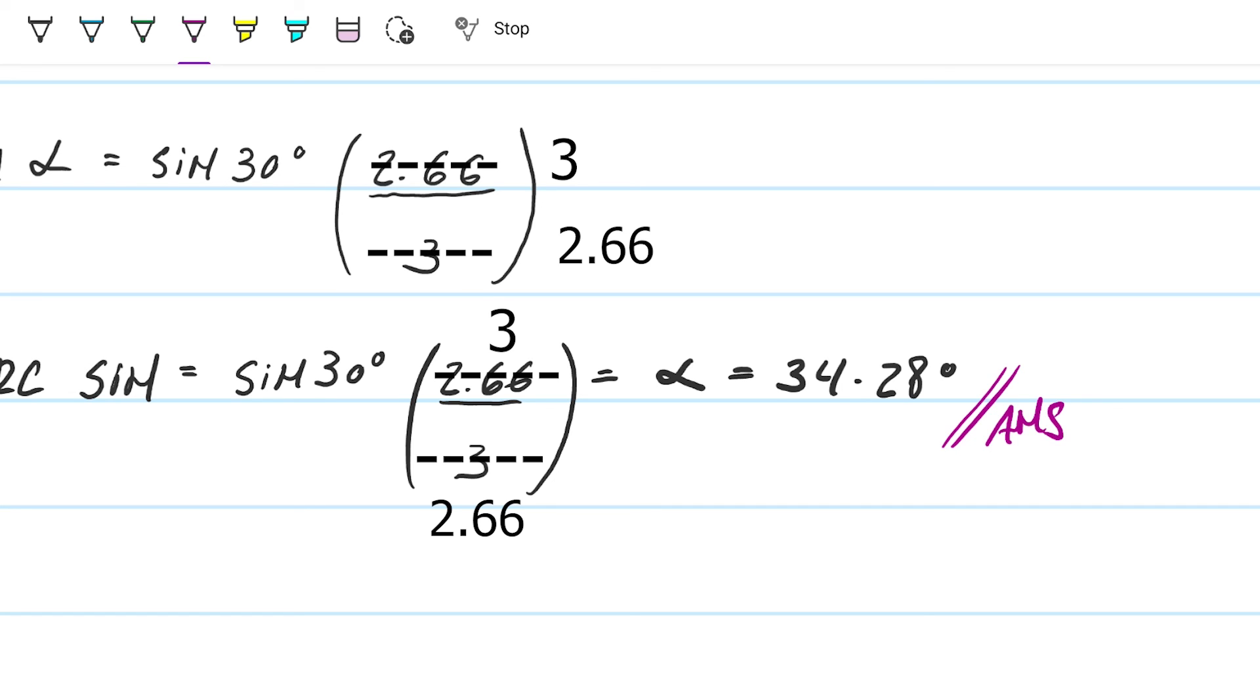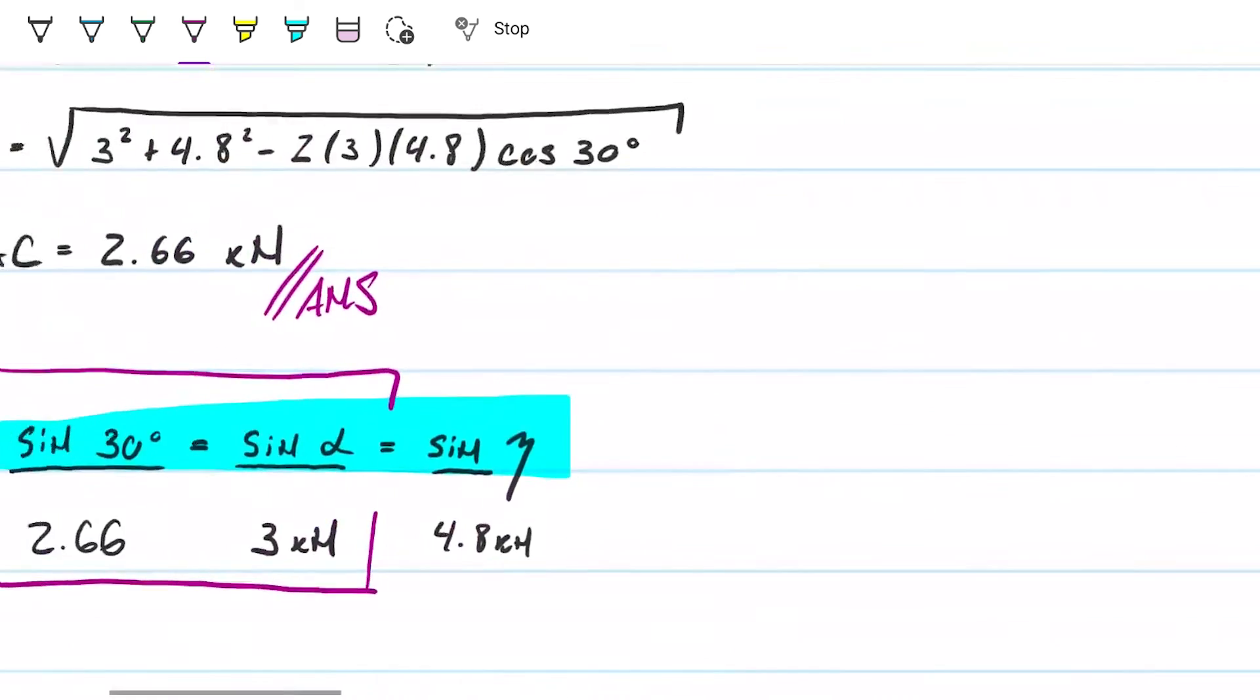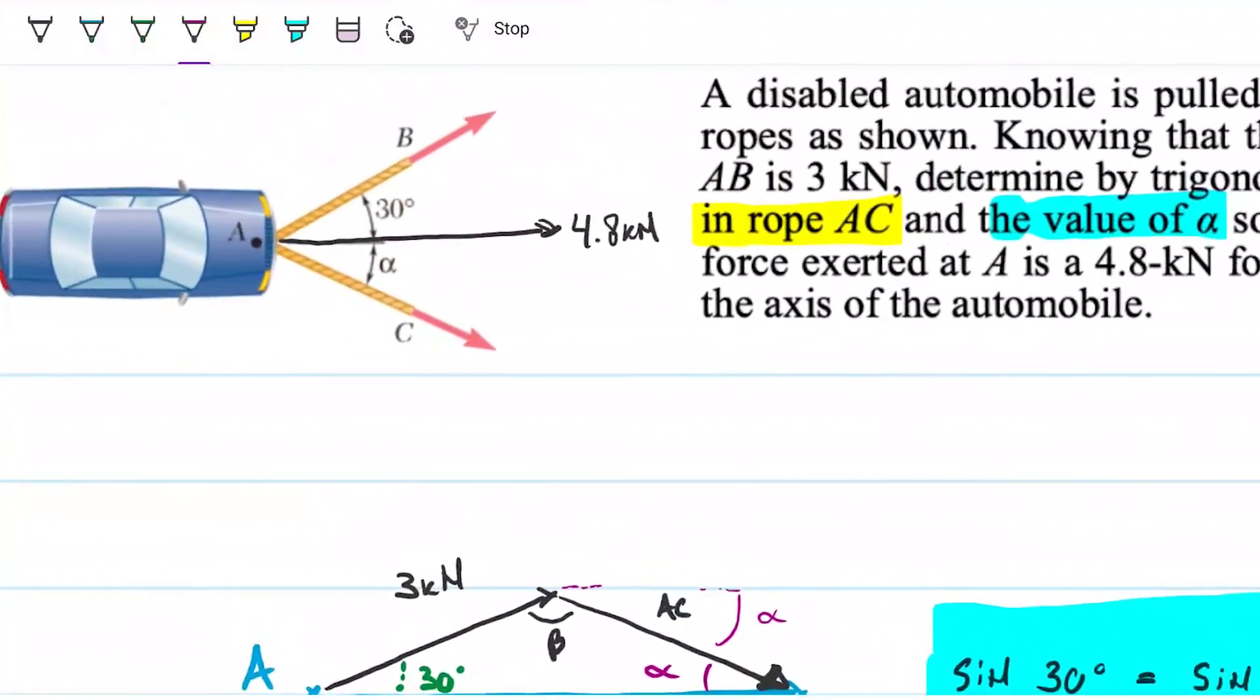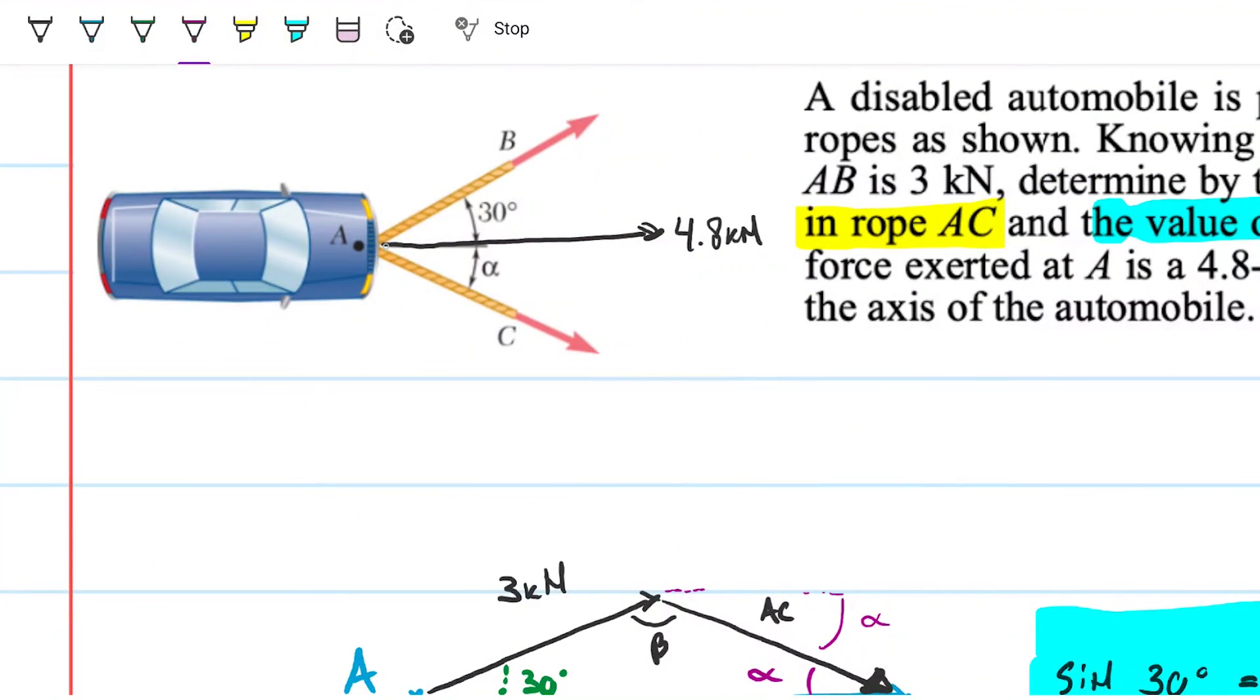So what does that tell us? Well, when you get stuck with the law of sines, the law of cosines can help you out. It also tells us that if we want the final force pulling this car to be exactly on the direction of the axis of this car, and I want this force to be 4.8 kilonewtons, then in addition to the 3 kilonewtons I have pushing here, I need to have a tension of 2.66 kilonewtons pushing at an angle of about 34 degrees from the horizontal right here. And that's going to enable me to get the resulting force that I want.